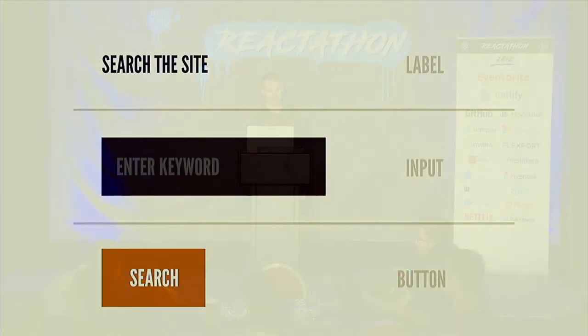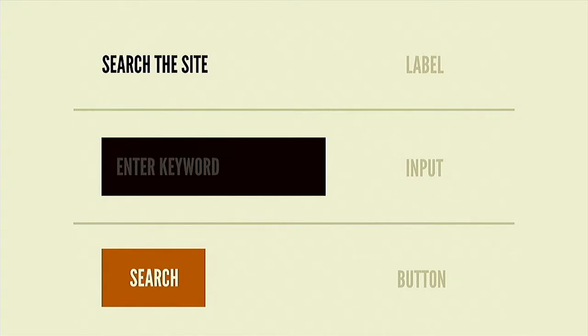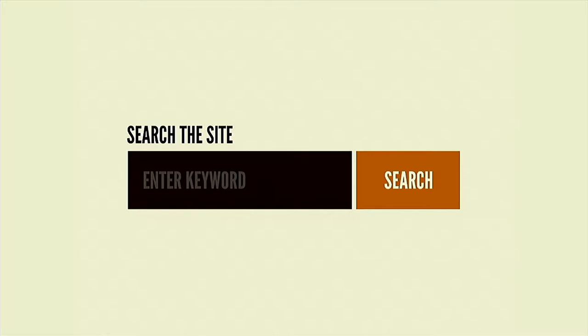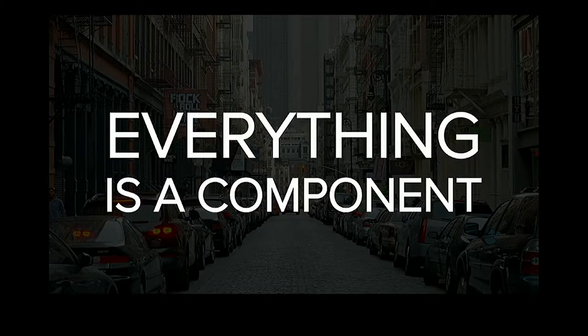Here we have the tiny pieces: a label, an input, and a button. Those might compose together to create a search box, for example. That might compose into a larger fragment called your header, which might compose into an actual page in your marketing site or application. So really, everything's a component — I'm a component, you're a component, we're all components.